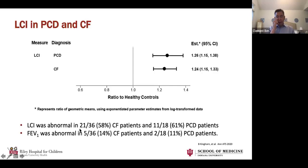More recently, a paper still in press in Annals of ATS compared LCI and FEV1 in CF and PCD, showing that in both conditions LCI was abnormal and more commonly abnormal than FEV1, suggesting you could use LCI for both conditions to identify impaired lung function.